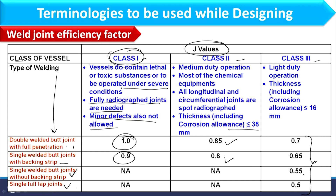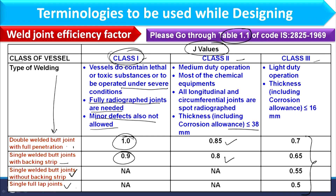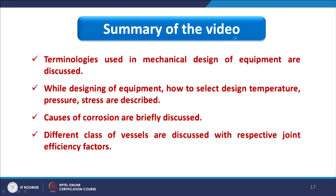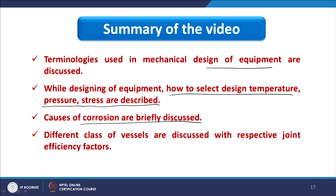In summary, this lecture discussed terminologies used in the mechanical design of pressure vessel equipment: how to select design temperature, design pressure, and allowable stress; causes of corrosion; and different classes of vessels with their respective joint efficiency factors. These terminologies will be further used in the detailed design of pressure vessels.